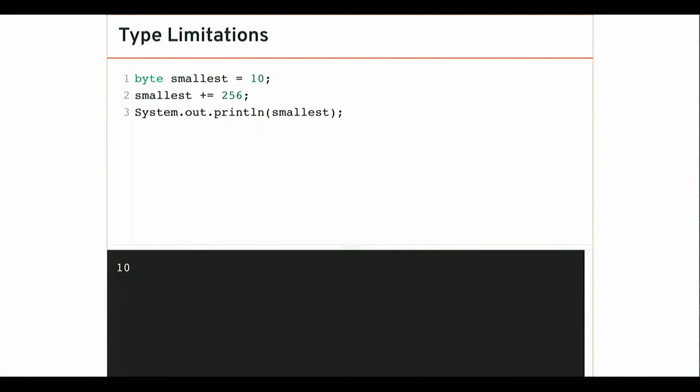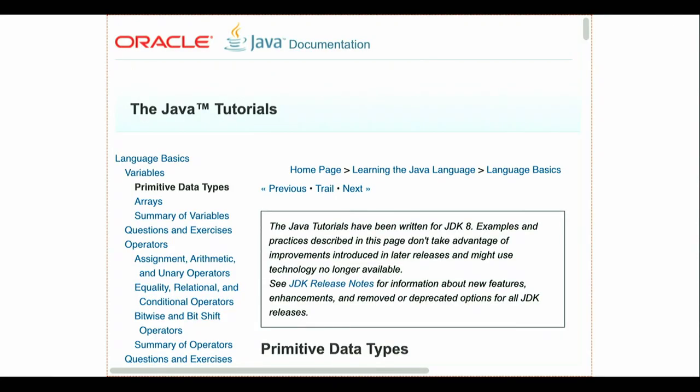Somebody asked about this on the forum, and Ben had one of the best answers: think about it like a clock. The byte type is like a clock that only has 256 positions. So if you add 256 to a number stored as a byte, you're going to wrap around and end up where you started. If you need to look up information about these types, you can do so online — it's part of the Java documentation.